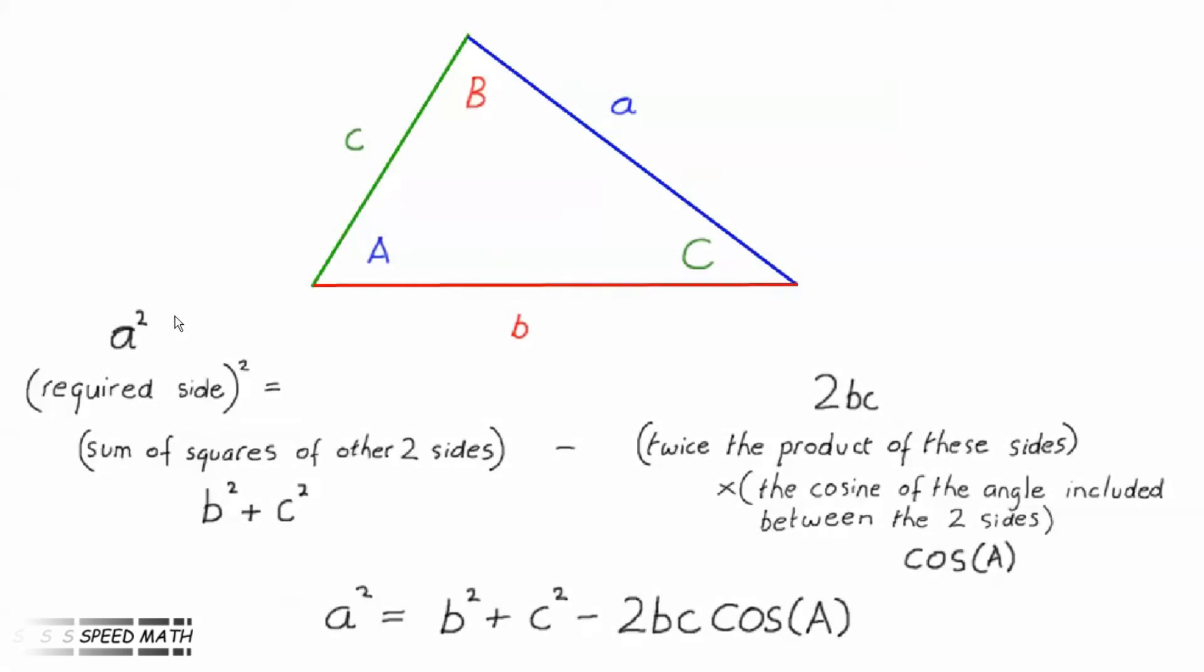Let's look more closely at the first line of these equations. a² is the required side squared and that's equal to b² plus c², which is the sum of the squares of the other two sides minus 2bc, which is twice the product of these sides, multiplied by cos(A), the cosine of the angle included between the two sides.